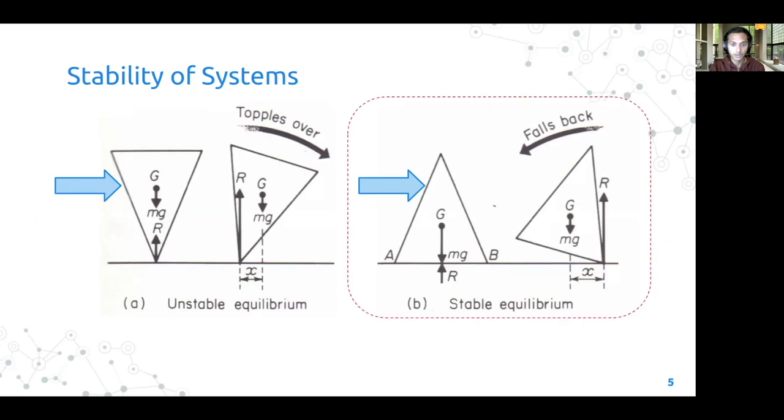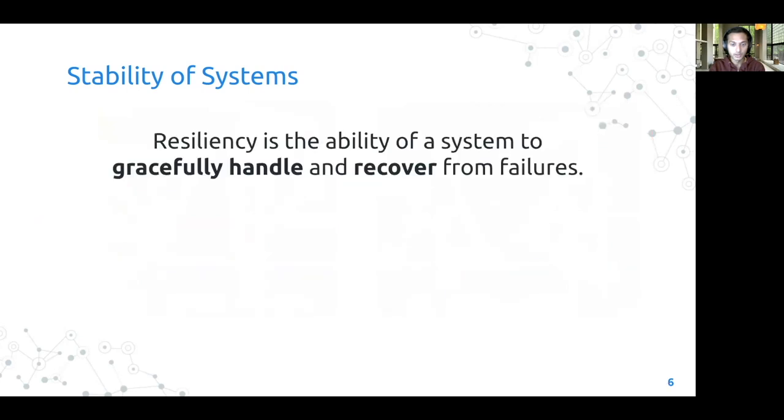The tendency of the system in the second image is naturally to fall back to its original state of operation. In our journey of building systems and services, we should aspire to having stable equilibrium, where even if there is an anomaly, it does not impact the system severely. In software engineering, resiliency is said to be the ability of the system to gracefully handle and recover from failures.